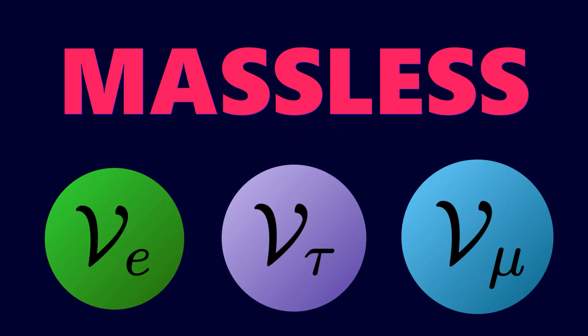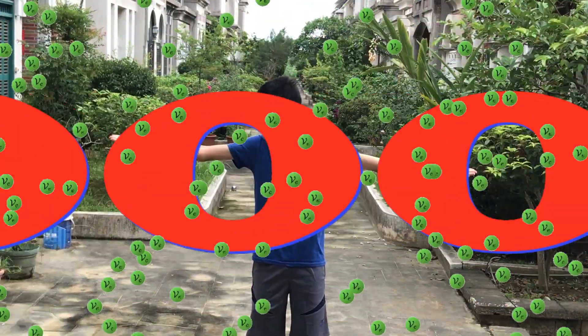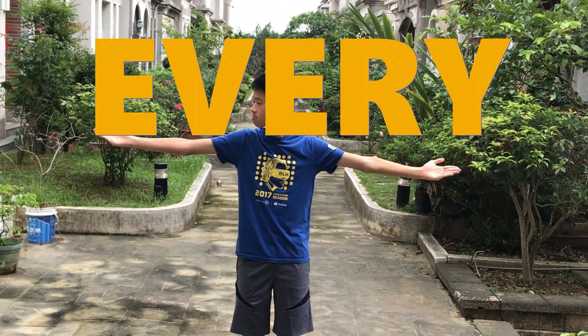According to the standard model of particle physics, they do not have mass. In fact, they are so tiny that trillions of them pass through our body every second.